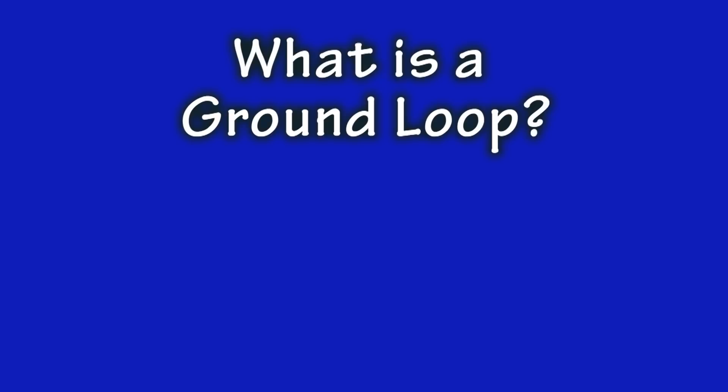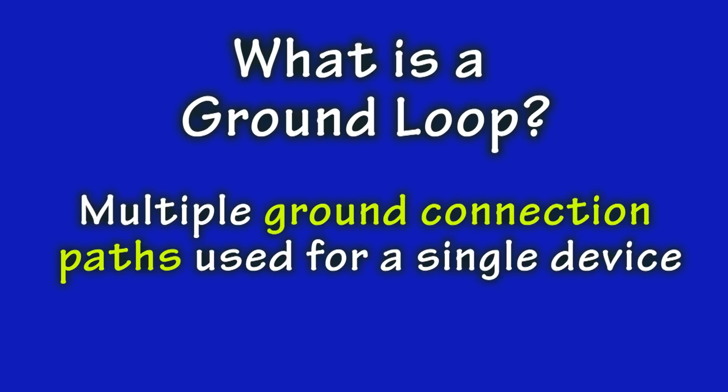One thing we can do is make sure we don't have a ground loop situation with the wiring of our radio circuit. So what is a ground loop? There is a simple definition: a ground loop occurs when there are multiple ground connection paths used for a single electrical device.